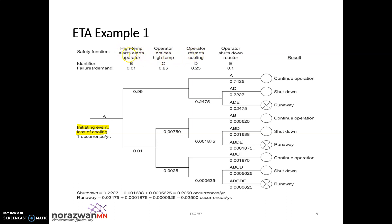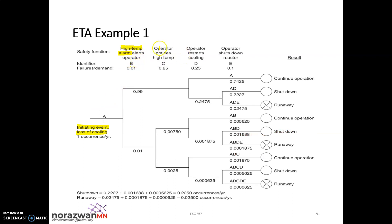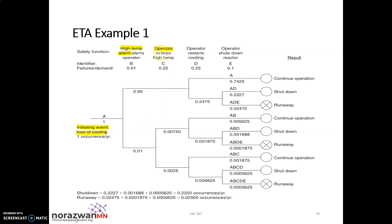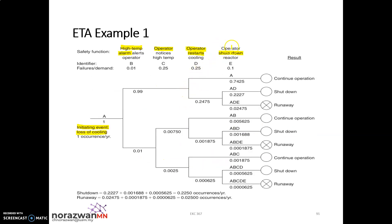The first safety function is the high temperature alarm alerting the operator. The second safety function is the operator — did the operator notice the high temperature alarm or not? The third safety function is the operator restarting cooling, which is the recovery step — does the operator restart the coolant flow after noticing the high temperature? The fourth and final safety function is emergency shutdown of the reactor.